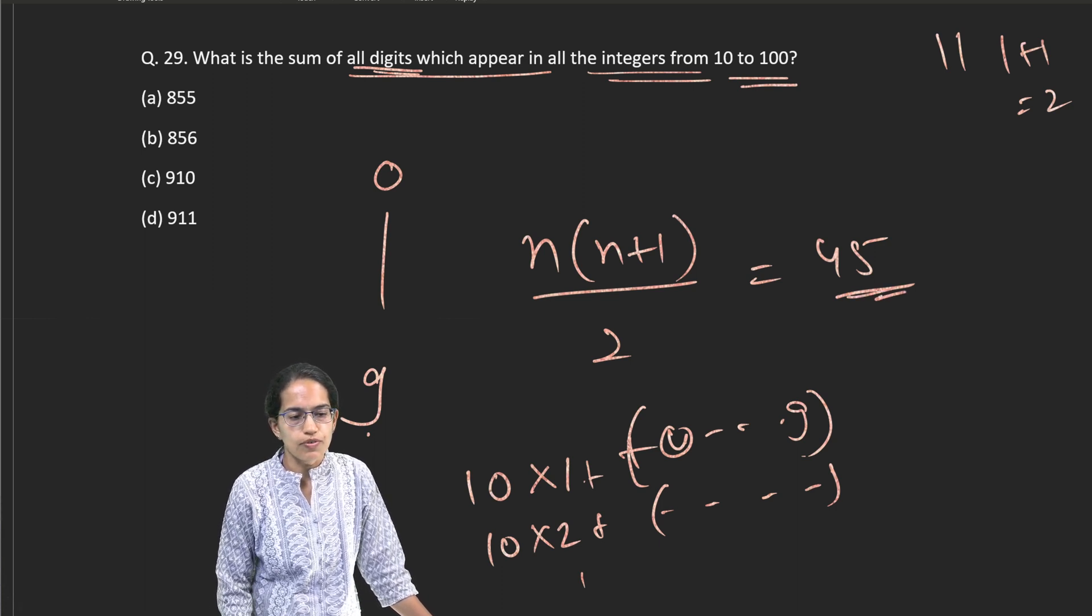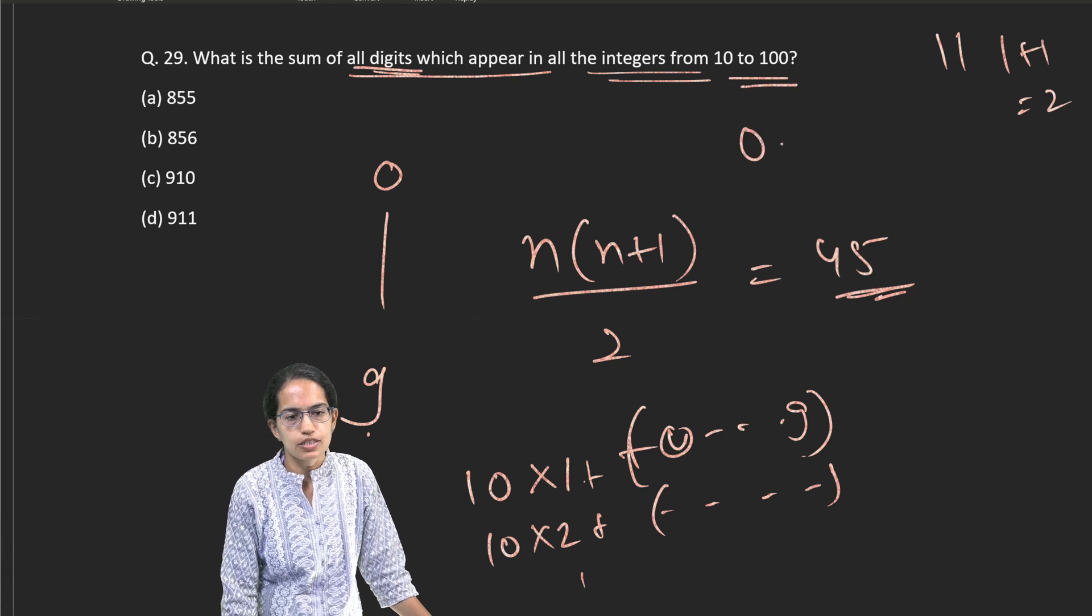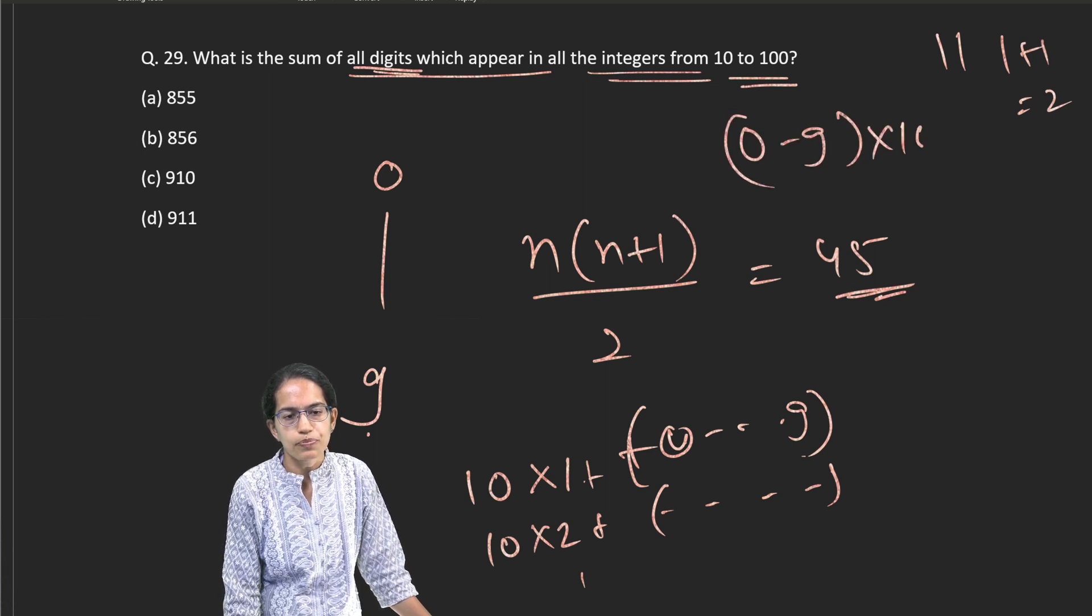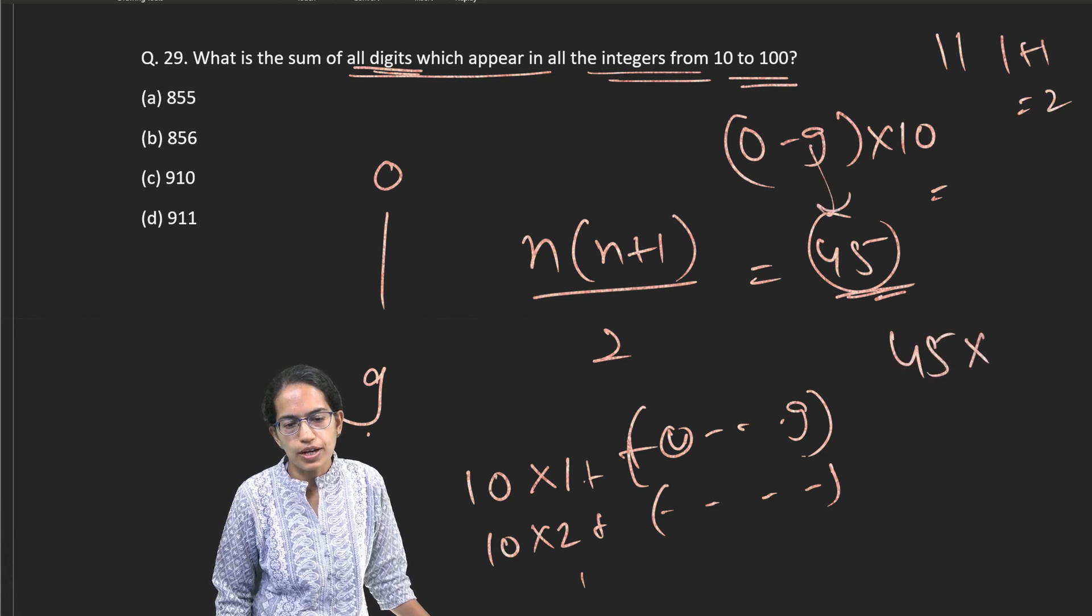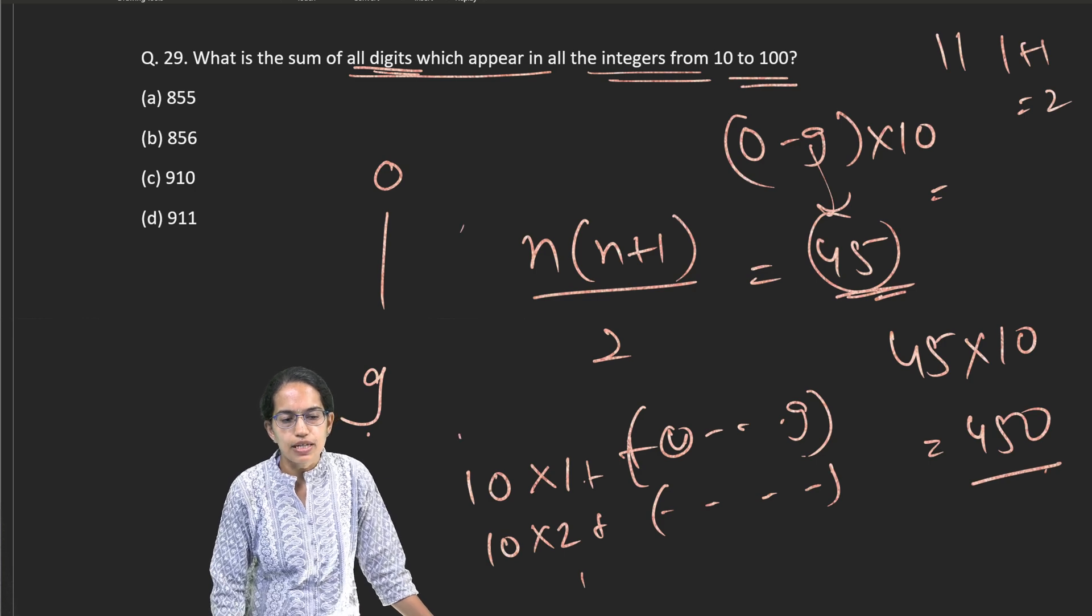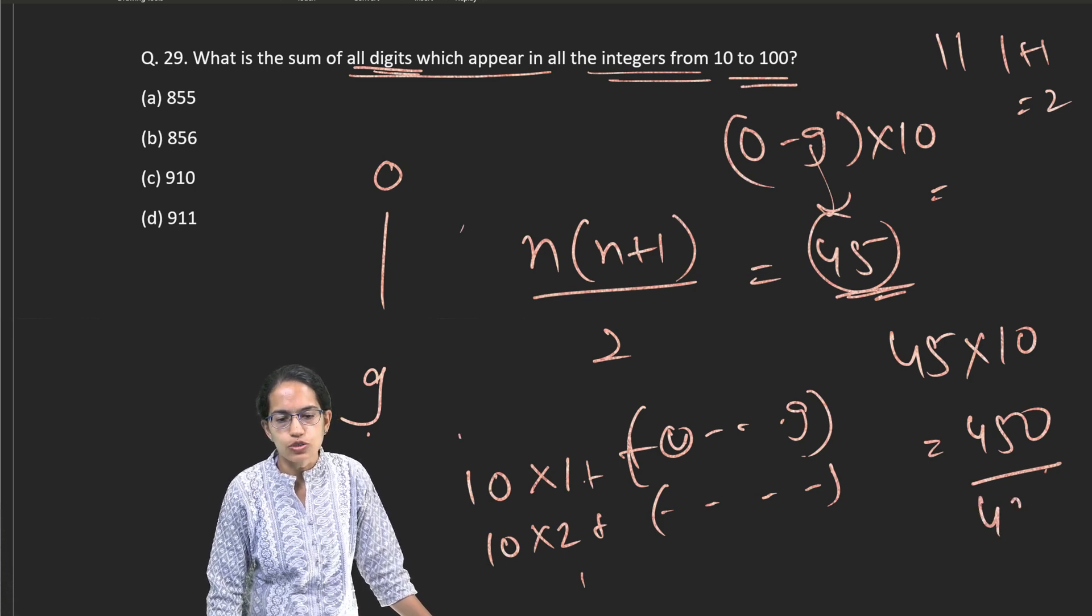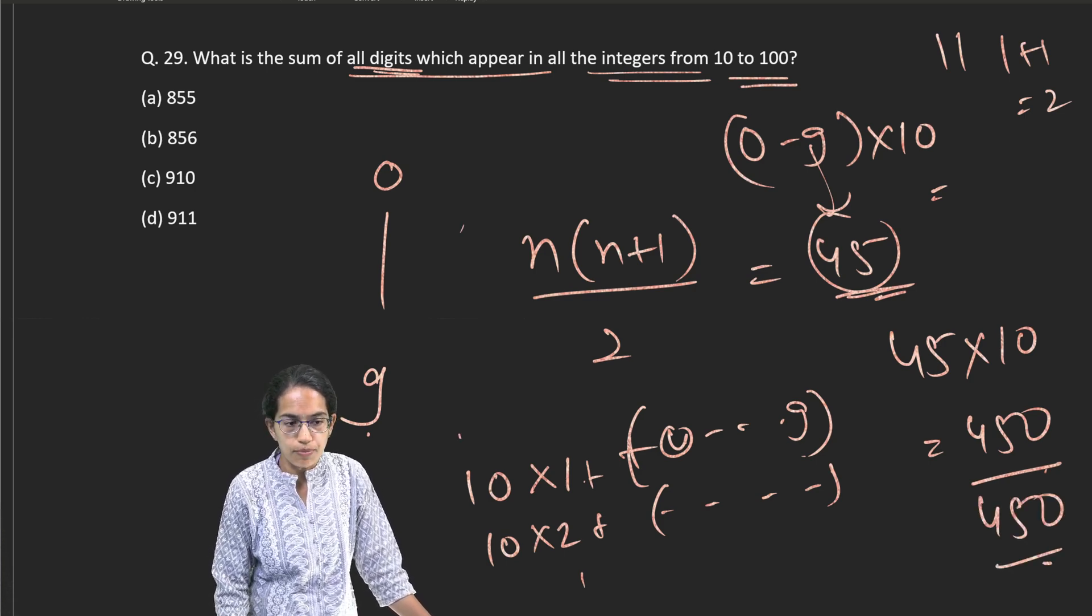So, this 45, I simply say 0 to 9 multiplied by 10. So this makes me how much? 0 to 9 is 45. So 45 into 10 is 450. And this I will repeat again for the second set. So it would be 450 again.